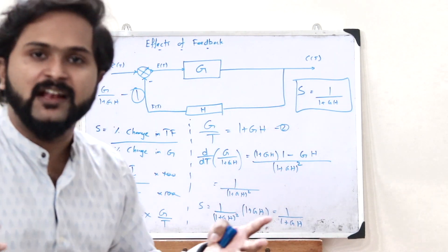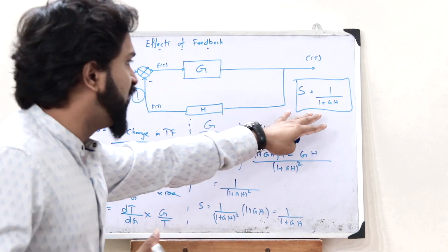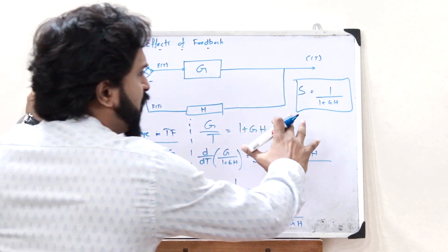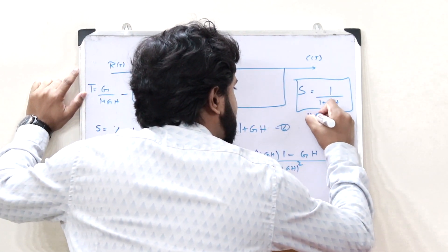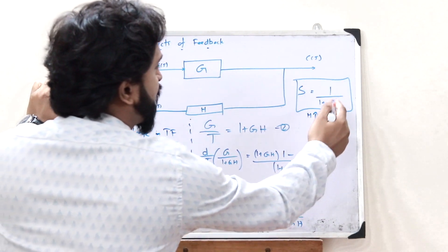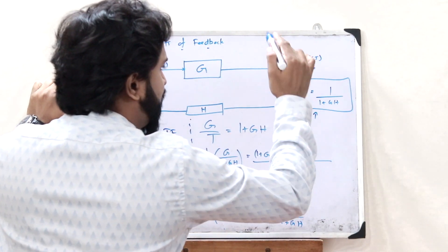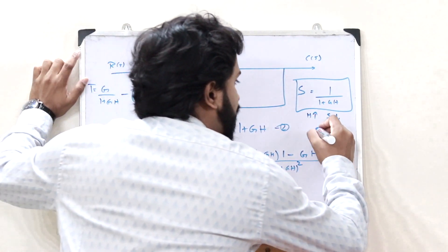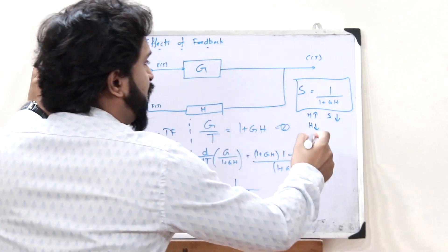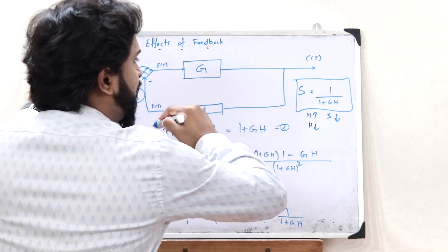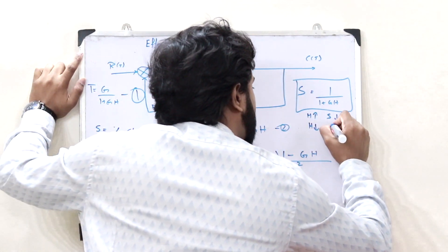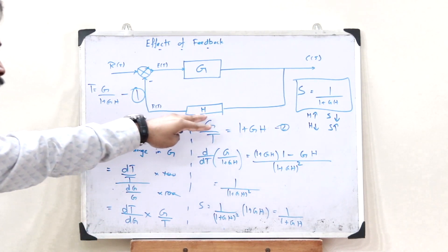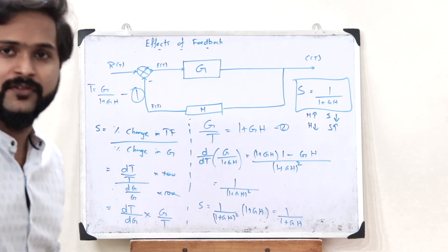So the sensitivity of the system is S = 1/(1+GH). From this equation we can observe that as the value of H increases, the denominator also increases, and therefore the sensitivity decreases. This is the effect of negative feedback on the sensitivity of a particular system.